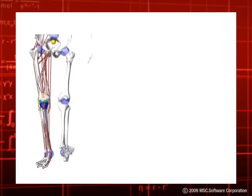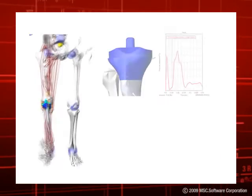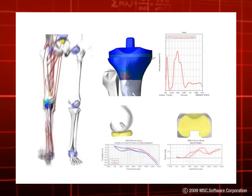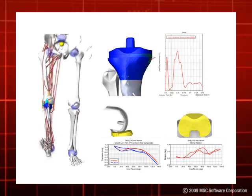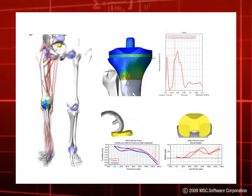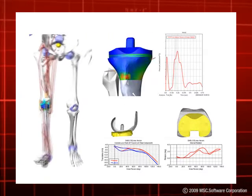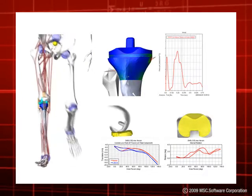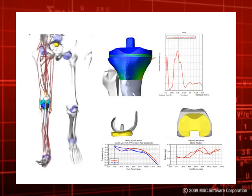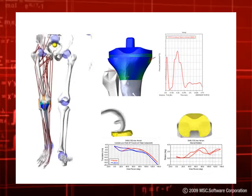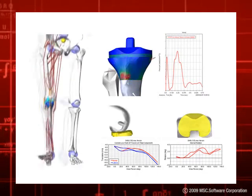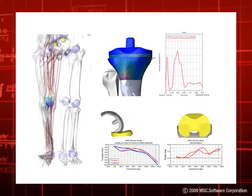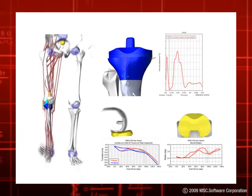FEA technology and multi-body dynamics simulation can be integrated simultaneously for optimal feedback to engineers. This allows dynamic boundary conditions and loads to be automatically transferred to the FEA model, and small changes in their impact on dynamic performance — such as the biomechanical range of motion or performance of the device inside the body — to be assessed. The end result is a fully integrated simulation solution in which engineers visualize full body gait models and witness how loads are being applied, allowing manufacturers to more accurately understand device performance.